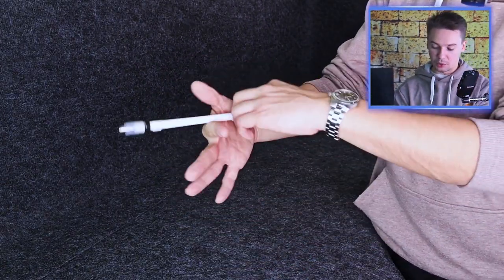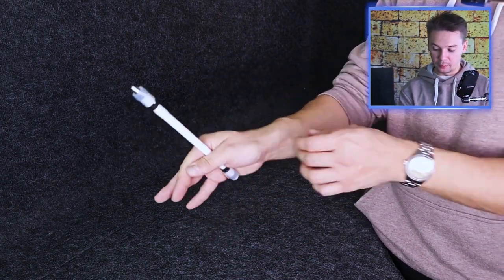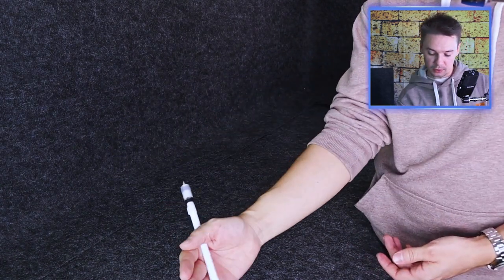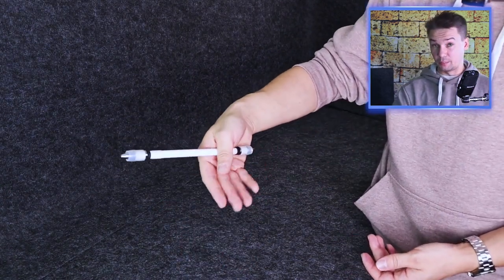So right after we catch pen mod in thumb flap, with pen's most part looking up, move your hand to do fingerless thumb around reverse.